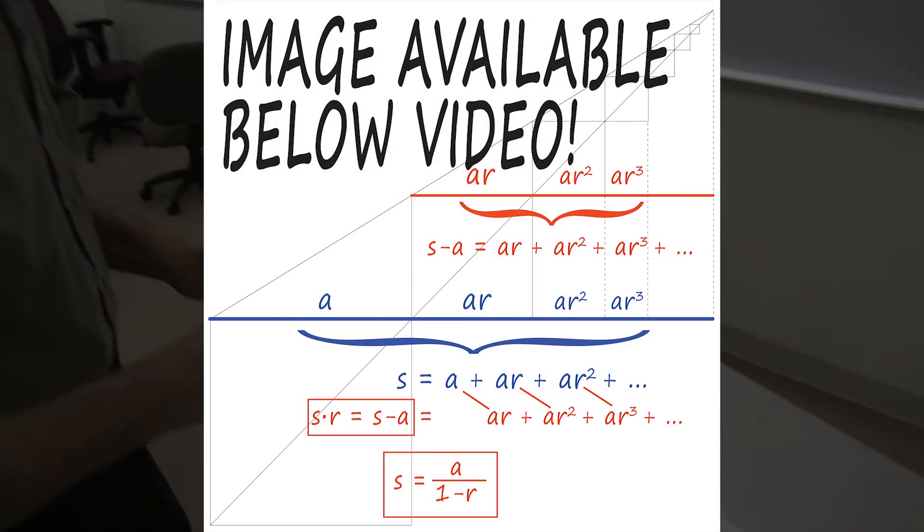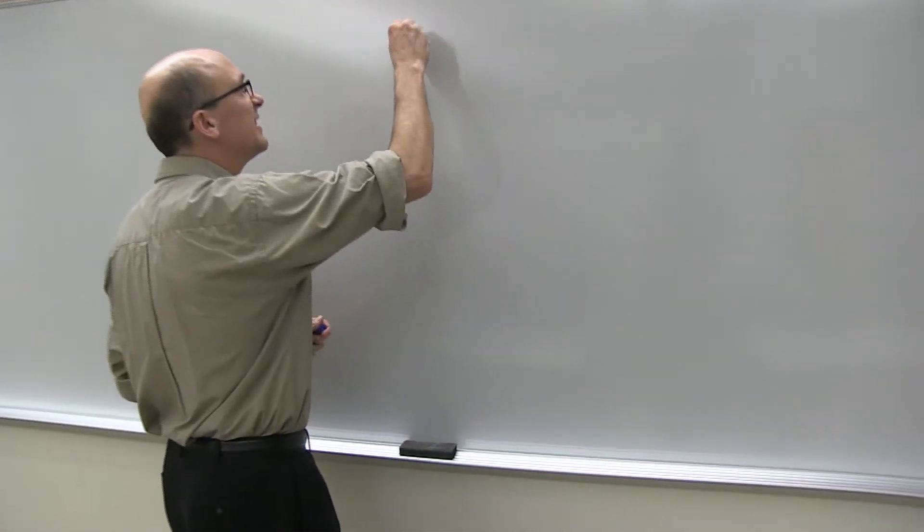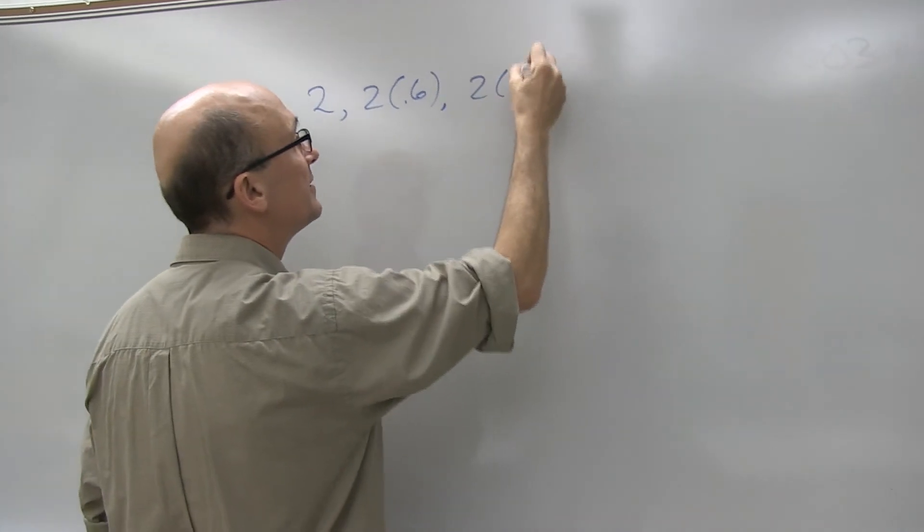All right, let's finish by applying this to our Zeno's problem, the rabbit and the turtle. We had the list 2, 60% of 2, 60% of that, and so on forever. This is a geometric sequence where there's our A, there's our R.